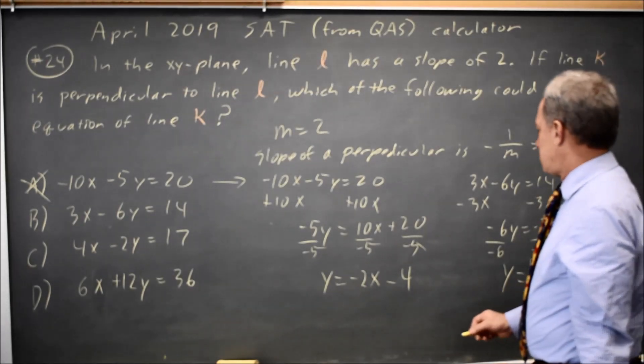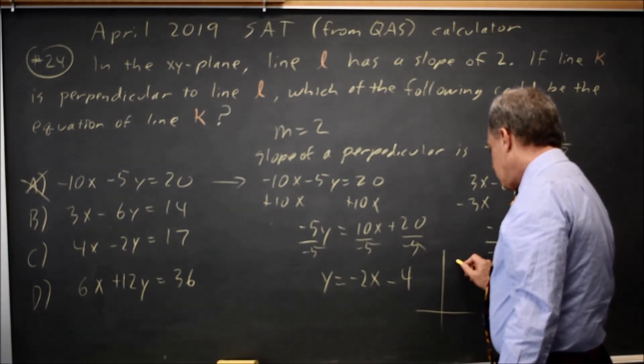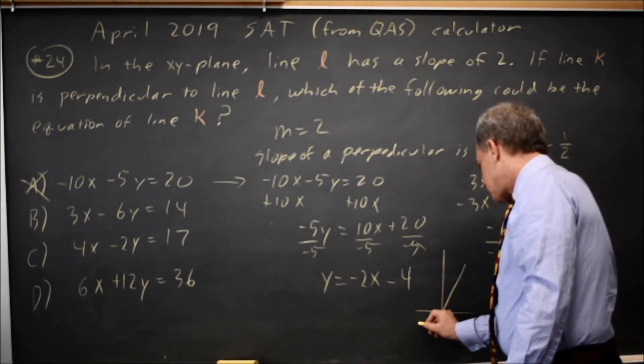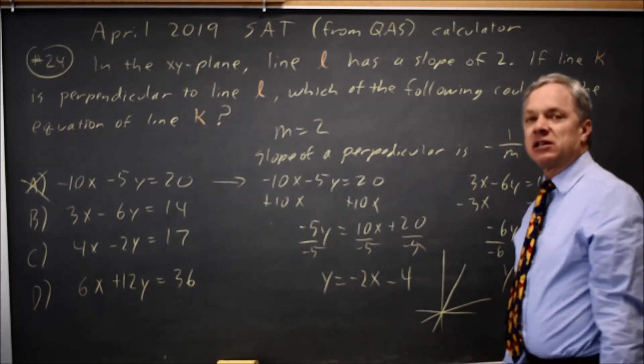If I sketch a positive 1 half slope and a positive 2, the positive 2 looks something like this. Positive 1 half looks like that. They are not perpendicular.